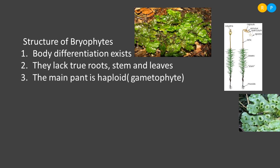The main plant in bryophytes is named the gametophyte. This means the main plant is meant for the formation of gametes — it mainly produces male and female gametes. It has only one set of chromosomes, so it is haploid. Because of that, it is also called the gametophytic plant. The main plant body in the bryophyte is the gametophytic plant — it is haploid in structure.